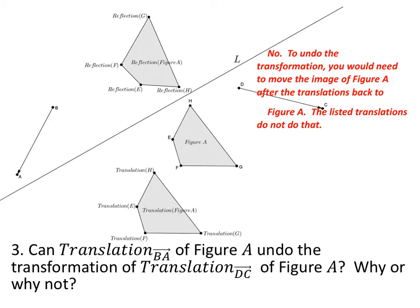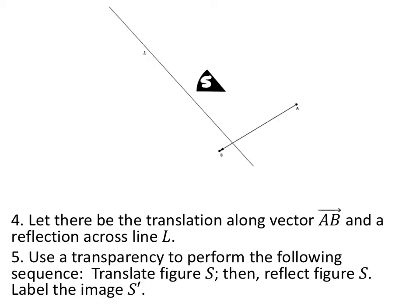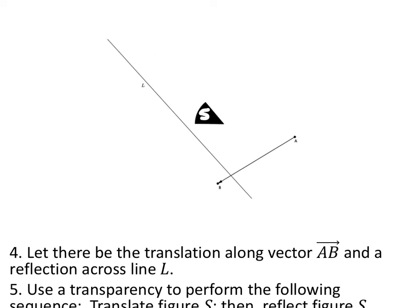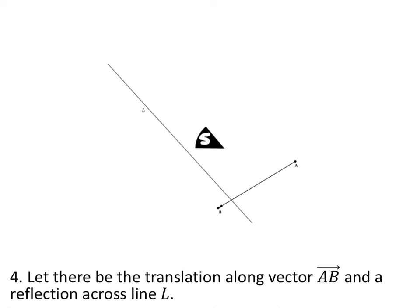The vector DC is not even in the same direction. So it wouldn't work. On this one, we're not worried about five. Let's just focus on number four. Let there be a translation along the vector AB and then reflect it across the line L. All right, so the first thing I would do on this, if I were you guys, is to trace figure S right here.